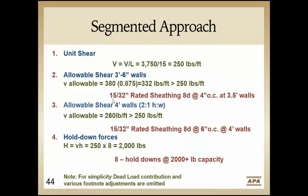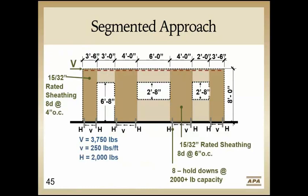For our narrower 3'6" shear walls, using 15/32-second rated sheathing with 8d common nails at 4 inches on center, applying the 0.875 adjustment to the 380 PLF allowable shear yields 332 PLF, which exceeds our 250 PLF design demand. Looking at the 4' long walls, same sheathing thickness and nail size, but nailing at 6 inches on center — we show that allowable shear exceeds the design shear. Hold-down force is 250 times 8 feet, yielding 2,000 pounds — so we need eight 2,000-pound hold-downs. That's a summary of using the segmented approach.